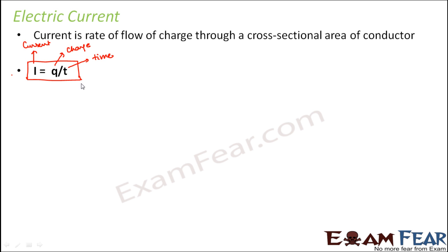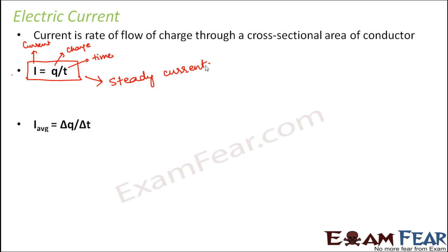This formula is true for steady current. But current might not be steady at all times. So when current is not steady, we talk about something called average current.